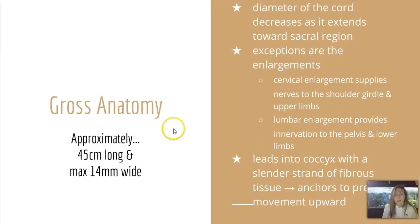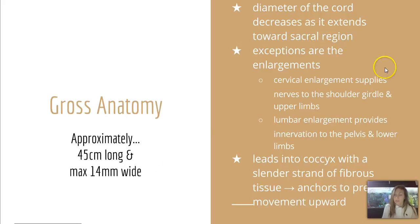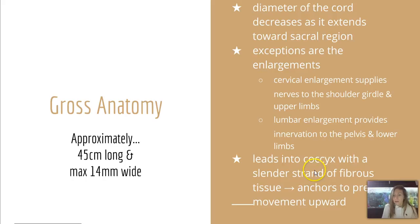The spinal cord is approximately 45 centimeters long, and at its largest point it's a max of 14 millimeters wide. The diameter decreases as it extends toward the sacral region, which is the lowest region. Exceptions are enlargements of the cervical and lumbar regions: the cervical enlargement supplies nerves to the shoulder girdle and upper limbs, and the lumbar enlargement provides innervation to the pelvis and lower limbs. It leads into the coccyx with a slender strand of fibrous tissue that helps anchor and prevent movement upward.